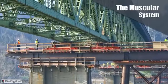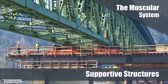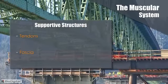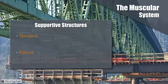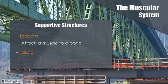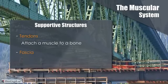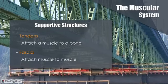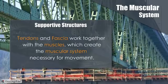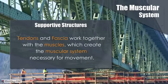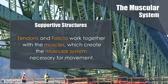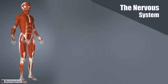Although muscles obviously make up the muscular system, there are still some supportive structures that are also a necessary part of the system. Tendons and fascia are important supportive structures for the skeletal muscles. Simply put, tendons are what attach a muscle to a bone, and fascia connects muscles to other muscles. Tendons and fascia work together with muscles to create the muscular system necessary for movement.